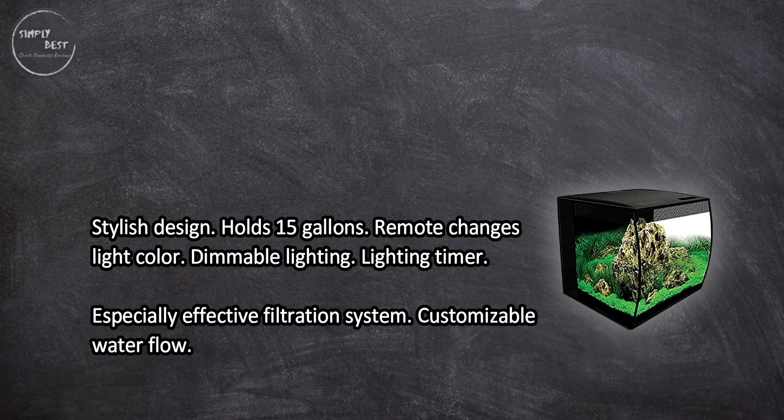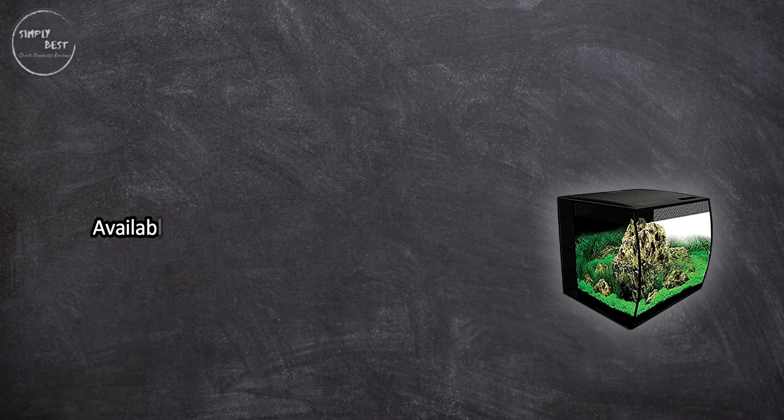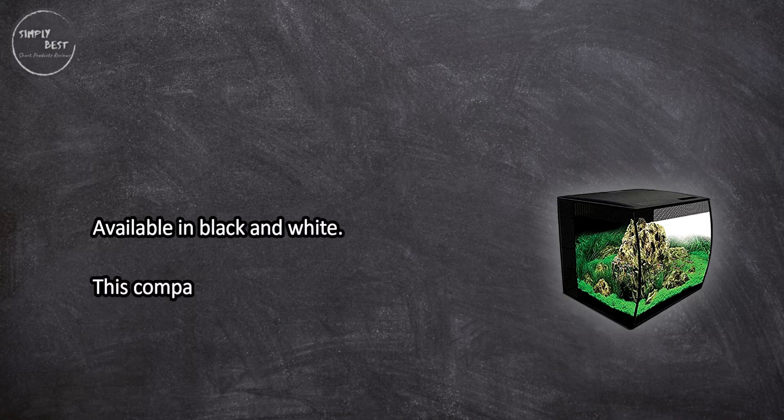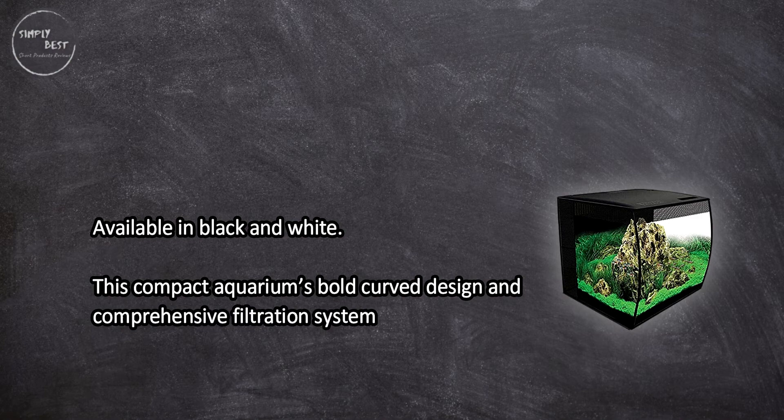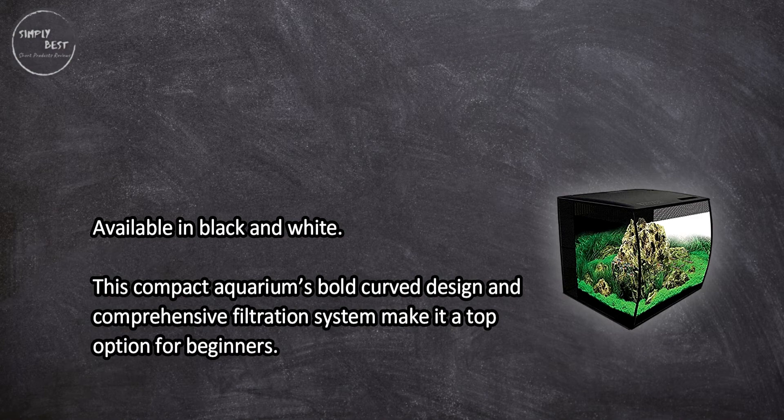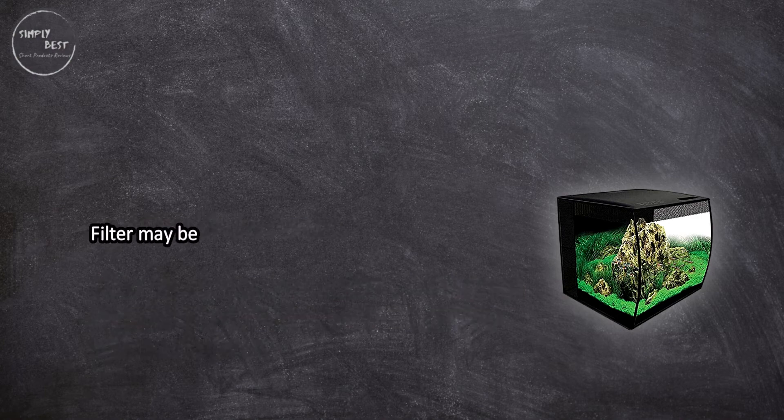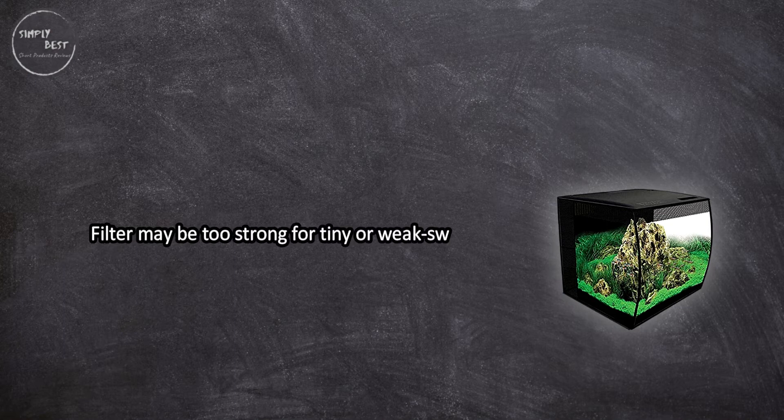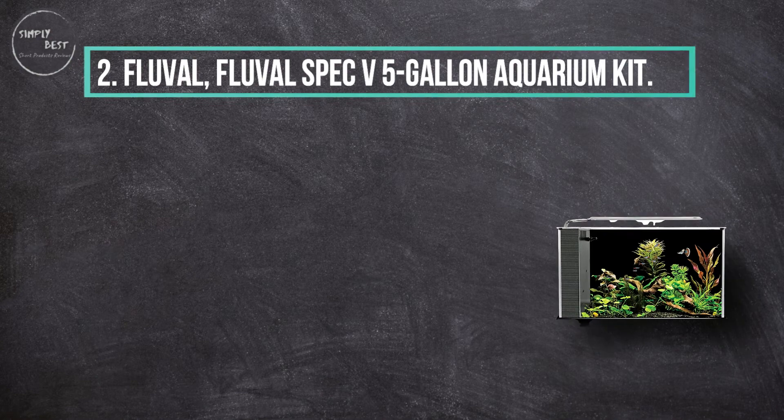This compact aquarium's bold curved design and comprehensive filtration system make it a top option for beginners. Filter may be too strong for tiny or weak swimming species. At number two, Fluval Spec V five gallon aquarium kit.